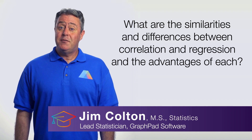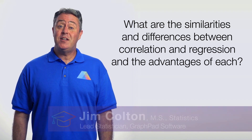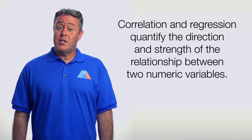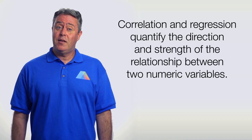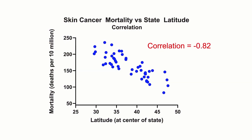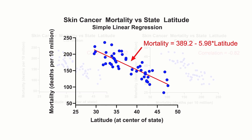What are the similarities and differences between correlation and regression, and the advantages of each? Both correlation and regression quantify the direction and strength of the relationship between two numeric variables. However, correlation quantifies the relationship through a single value between negative 1 and 1, whereas regression describes the relationship through an equation of the form y equals a plus bx.